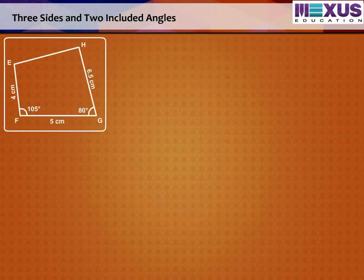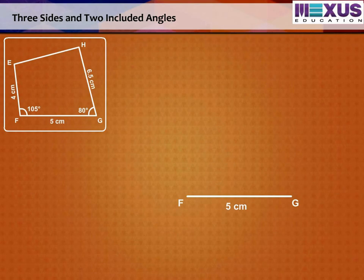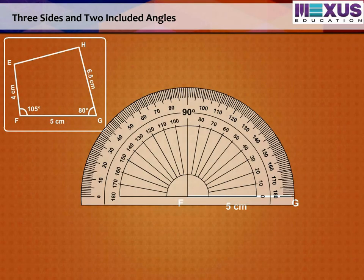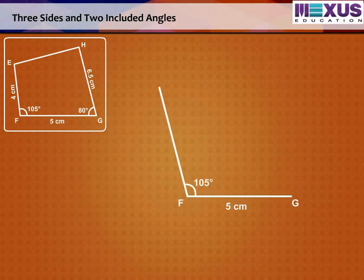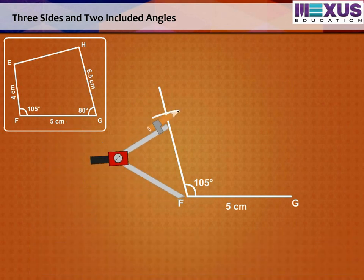Step 1. Draw a line segment FG equal to 5 cm using a ruler. Now draw angle FGH equal to 105 degrees with the help of the protractor. Step 2. Cut an arc on this line with F as center and radius 4 cm. Mark the intersecting point as E.